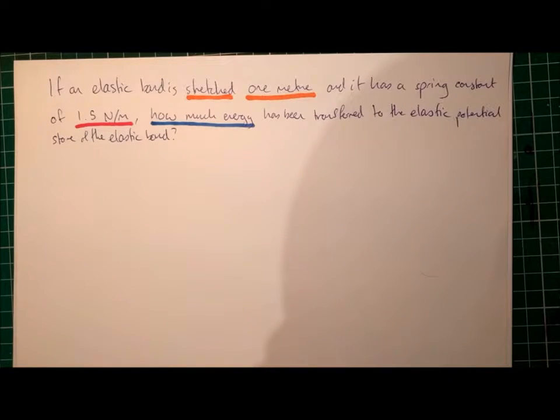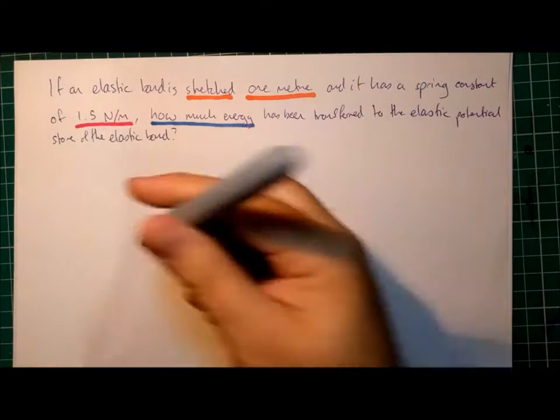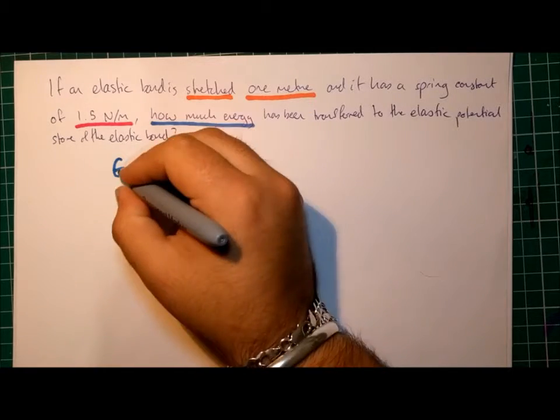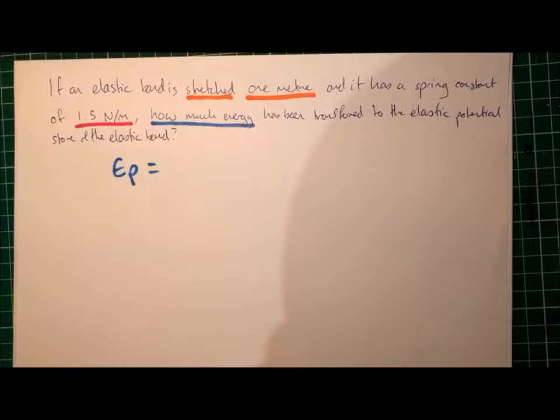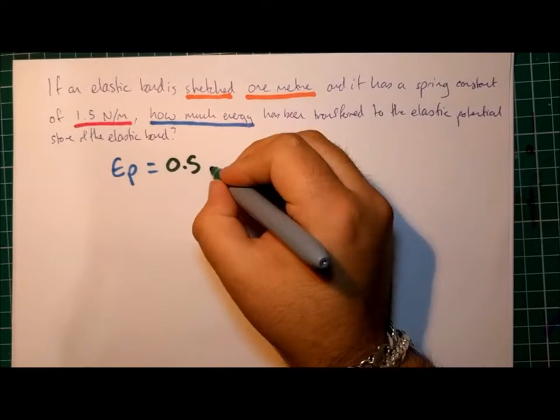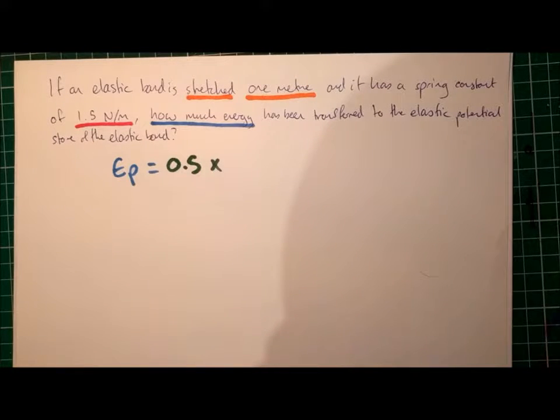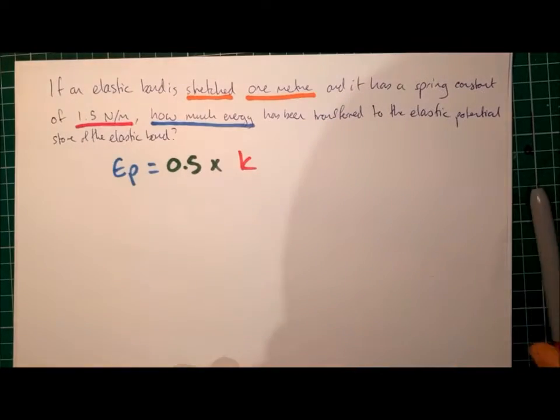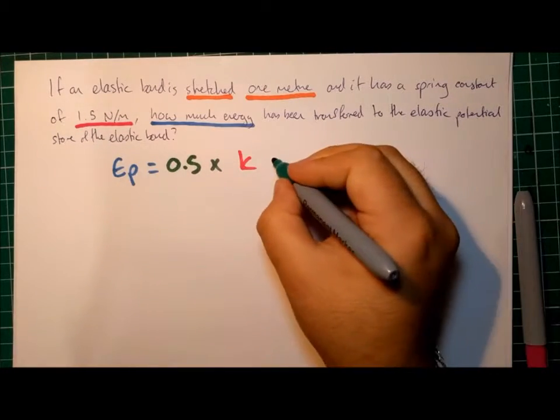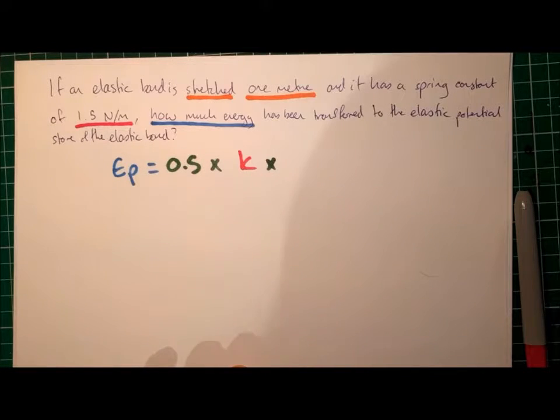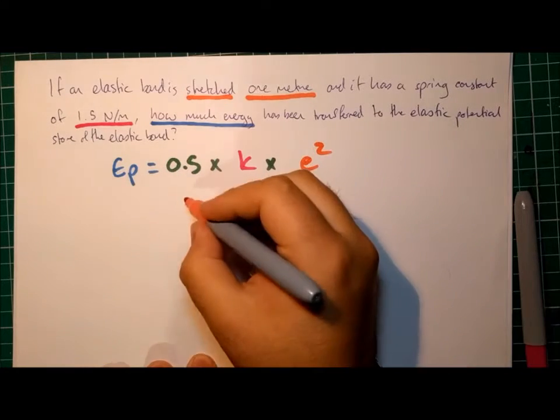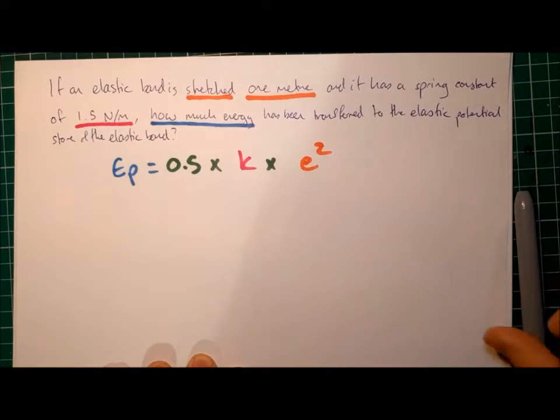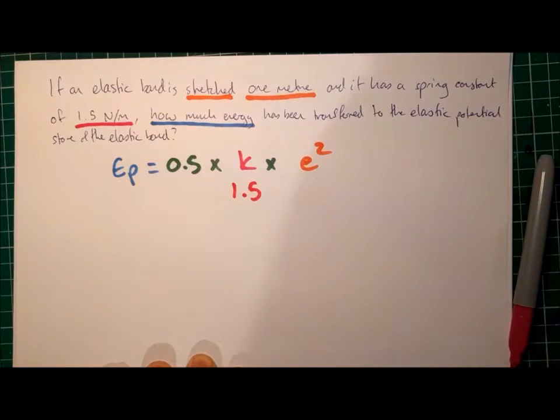So, first things first, let's write out the equation that we know is relevant for this question, the Elastic Potential equation. We have the Elastic Potential energy equals 0.5 times the spring constant times the extension squared. Now we put the numbers into that equation to make our life easier. We still don't know what EP is, but we do know that k is 1.5, and we know that e is just 1, 1 squared.